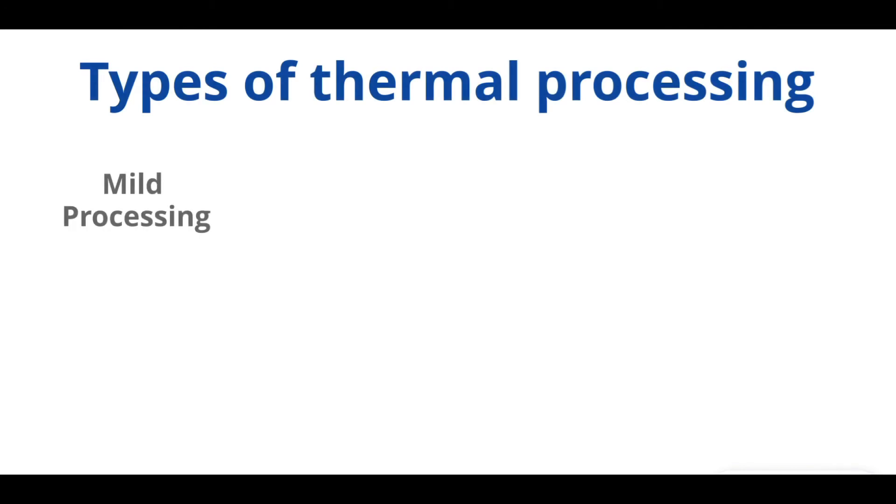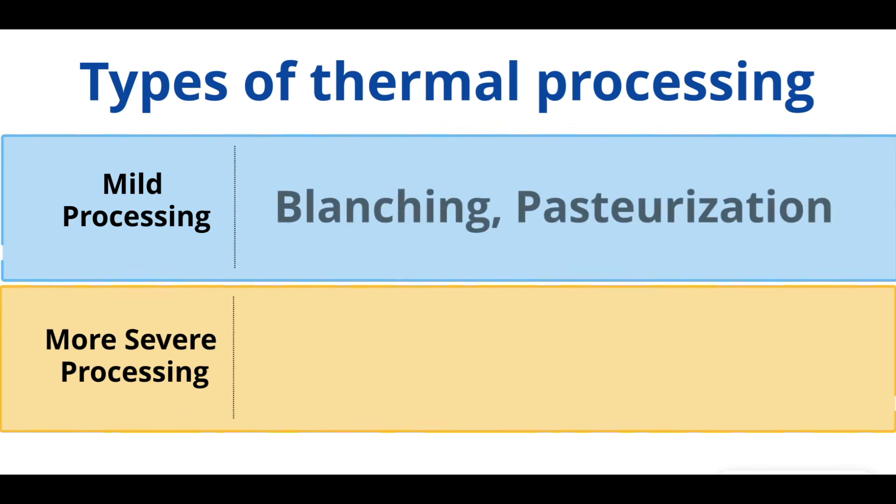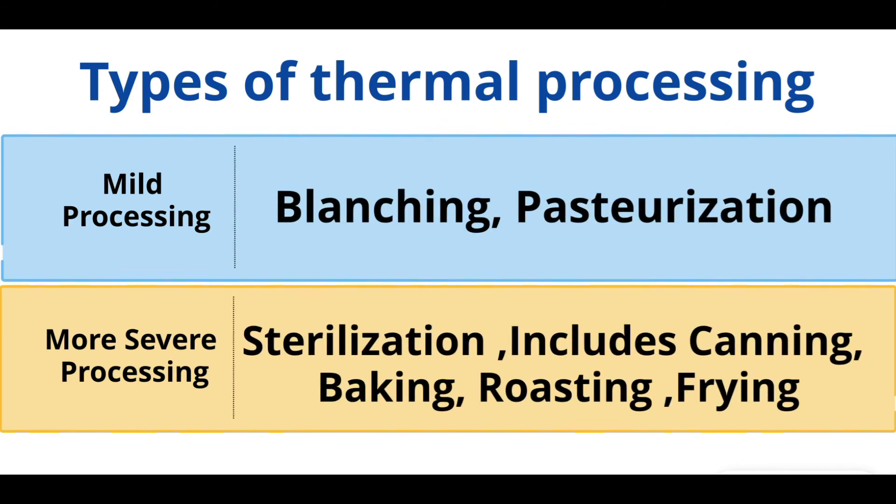Types of thermal processing include blanching and pasteurization, which come under mild thermal processing. Sterilization comes under more severe thermal processing, which also includes canning, baking, roasting, and frying.